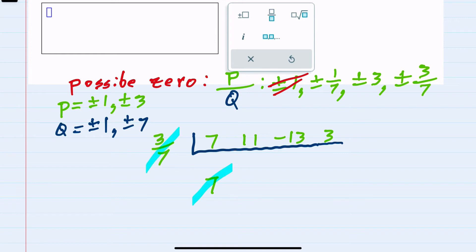And here when we multiplied three sevenths times seven we would get three, adding would be 14. Three sevenths times 14: seven goes into 14 times two, and two times three is six.